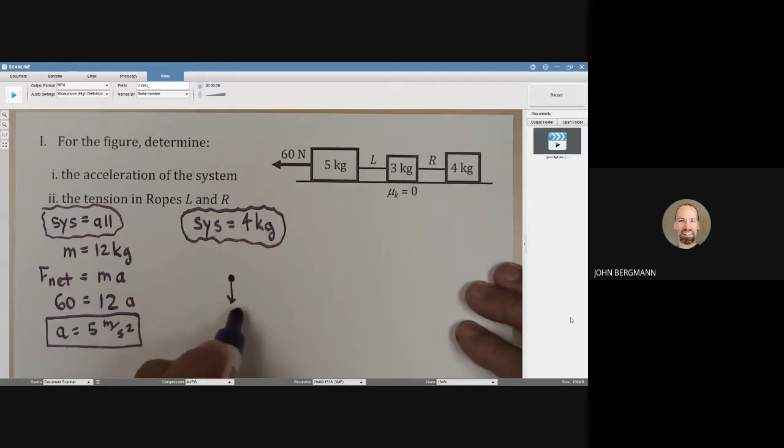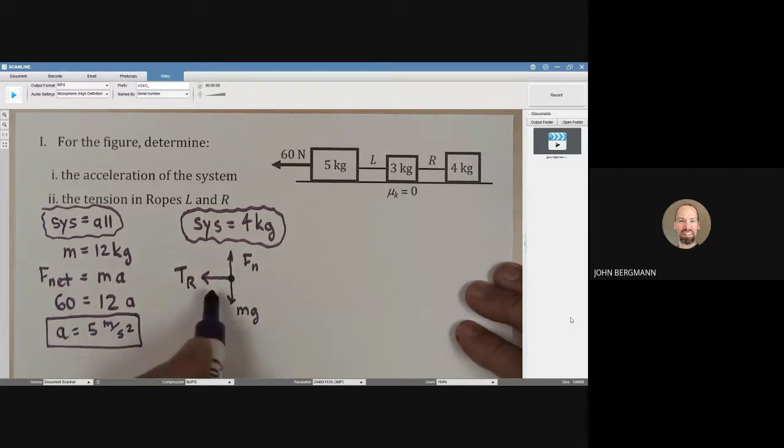Well, it would have mg down like that. There would be a normal force. And then there would be the tension in this right rope. Well, Fn and mg are numerically equal to each other. So that means that the net force is simply the tension. What does Newton's second law say? That the net force is equal to the mass times the acceleration of that mass. Hey, the acceleration of the mass is 5. Every bit of this system we just found has an acceleration of 5. Therefore, the tension must be 20 newtons.